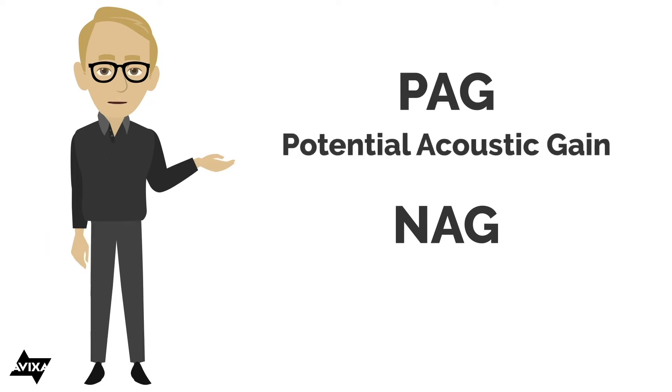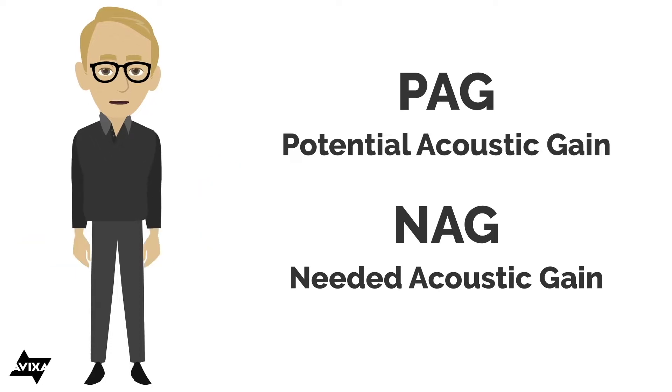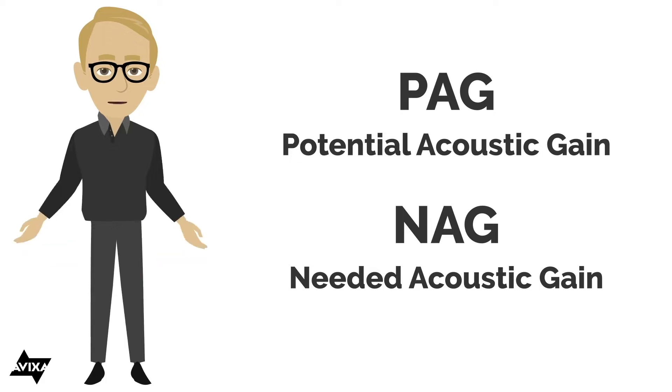PAG stands for potential acoustic gain. That's what my system will deliver. That's the capability of my system. And we are going to compare that against the NAG, the needed acoustic gain. This is what I need from my system. It would seem obvious the potential of my system needs to be greater than or equal to the need or what I need out of my system so that the system is going to be stable.